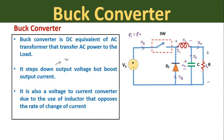In this circuit, the load voltage V0 will be smaller than the source voltage Vs, but at the same time the load current I0 will be greater than the source current Is. This buck converter is also called a voltage-to-current converter due to the use of the inductor, which opposes the rate of change of current through it.